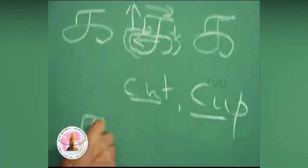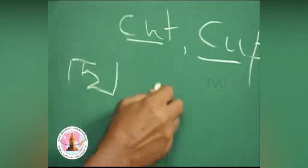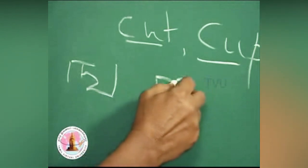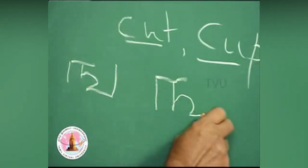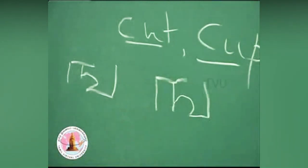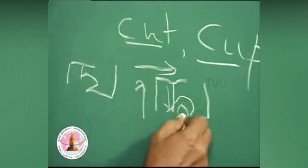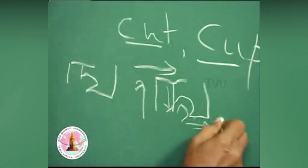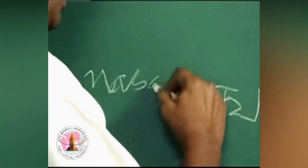The next letter is: again a vertical, horizontal, downward stroke, a loop, again horizontal and a vertical — it is written like this. Upward stroke, horizontal, come down, take a loop and then proceed and go up. This is Na, a nasal sound.